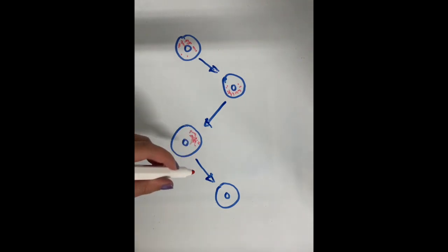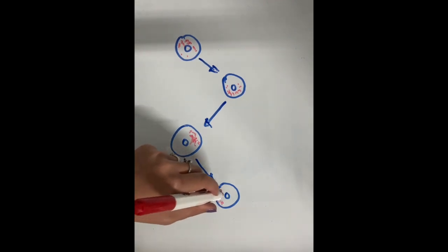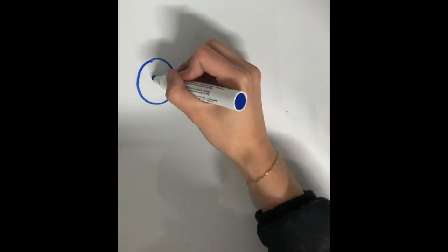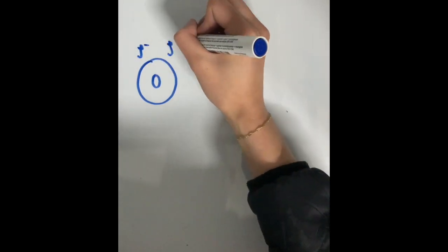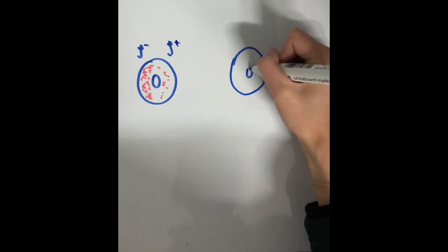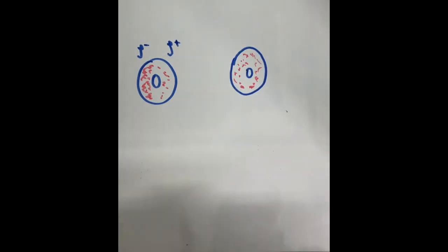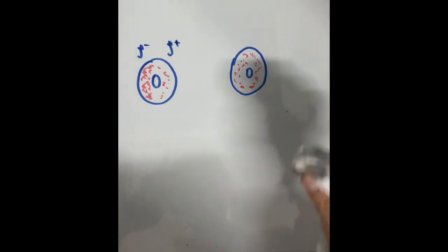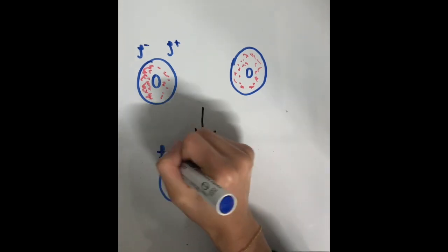Then the electron cloud of the two nuclei begin to repel each other. Here you can see how one dipole of one electron induces a dipole on the other electron, and a weak dipole attraction of Van der Waals bond is created.